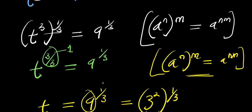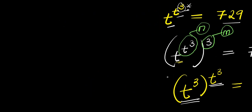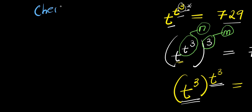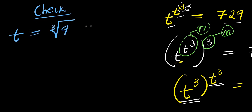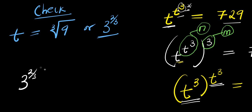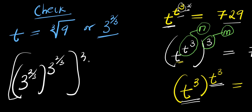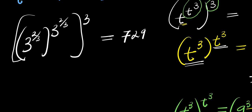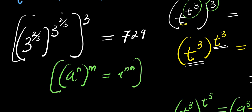So guys, that is it and this becomes the solution. The next thing I'm going to do will be to check. Let's verify if the value of t satisfies the original equation. Remember our t equals the cube root of nine, or three power two over three. So we are going to insert this for t. Instead of writing t, I'll have three power two over three, raised to the power of three power two over three, raised to the power of three, equals 729. Applying the rule: a power n raised to the power of n equals a power n times n — multiplying this out, three times two is six divided by three, that is two.